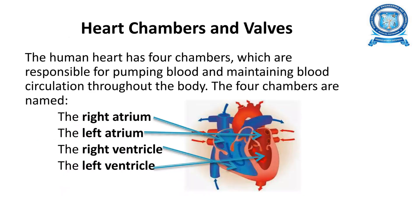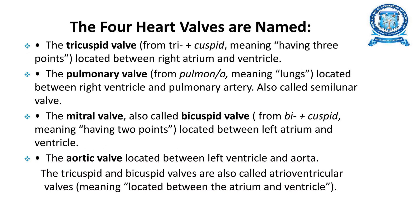The heart has four chambers: right atrium, left atrium, right ventricle, and left ventricle. The four heart valves are: the tricuspid valve, located between the right atrium and ventricle; the pulmonary valve, between the right ventricle and pulmonary artery; the mitral valve, located between the left atrium and ventricle; and the aortic valve, located between the left ventricle and the aorta.